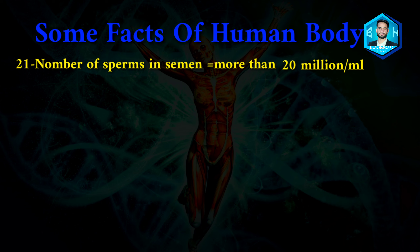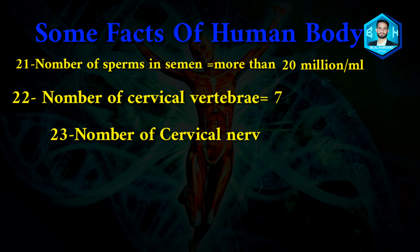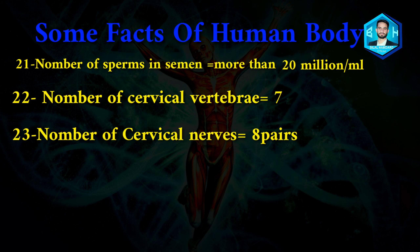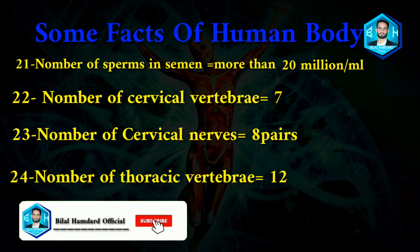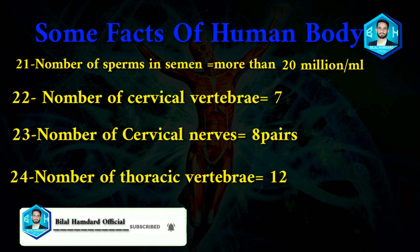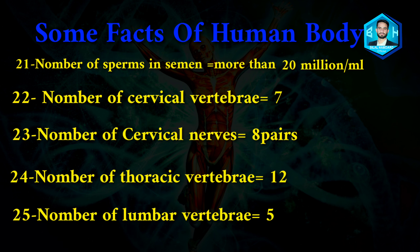Number twenty-two: number of cervical vertebrae is 7. Number twenty-three: number of cervical nerves is 8 pairs. Number twenty-four: number of thoracic vertebrae is 12. Number twenty-five: number of lumbar vertebrae is 5.